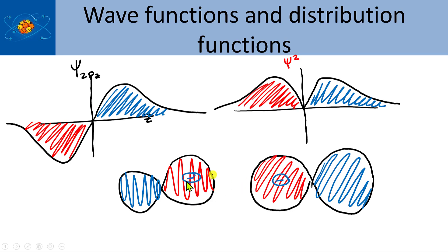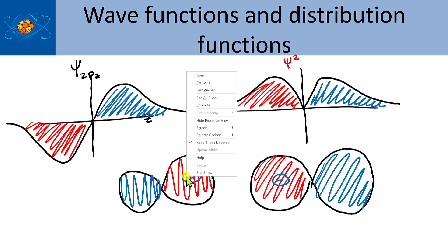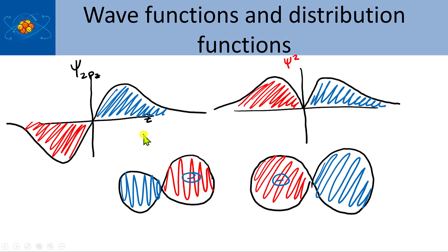In p orbitals, one side is always the positive phase and the other side is always the negative phase. In d orbitals, the phases alternate — positive, negative, positive, negative — and there are never two adjacent lobes with the same phase.